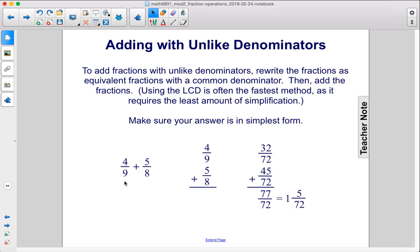So here, we have 4/9 + 5/8. Here's our addition problem, 4/9 + 5/8. The lowest common denominator between 8 and 9 is 72. So you convert these fractions to have the denominator of 72. Then you just add the numerators together, and you get 77/72.